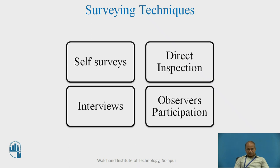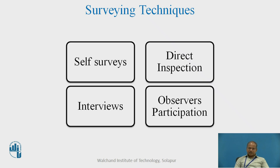There are four surveying techniques. Self-survey means the people on their own register their opinions about the factors being surveyed. The officers of the town planning department may go to the site and inspect it — that is called direct inspection, and a pinpointed idea must be there for which information is to be collected. There are personal interviews through which surveys can be conducted and data generated. Finally, the observer's participation itself can be used to record, based on physical experience, the various convenience factors of the people who were supposed to respond.